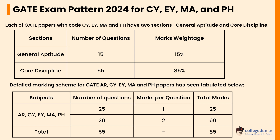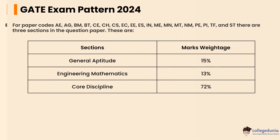Each of the GATE papers with codes CY, EY, MA, and PH has two sections: General Aptitude and core discipline. The General Aptitude section carries 15 questions with 15 percent weightage, whereas core discipline carries 55 questions with 85 percent weightage. For GATE papers ARC, YEY, MA, and PH, there will be 25 one-mark questions and 30 two-mark questions.